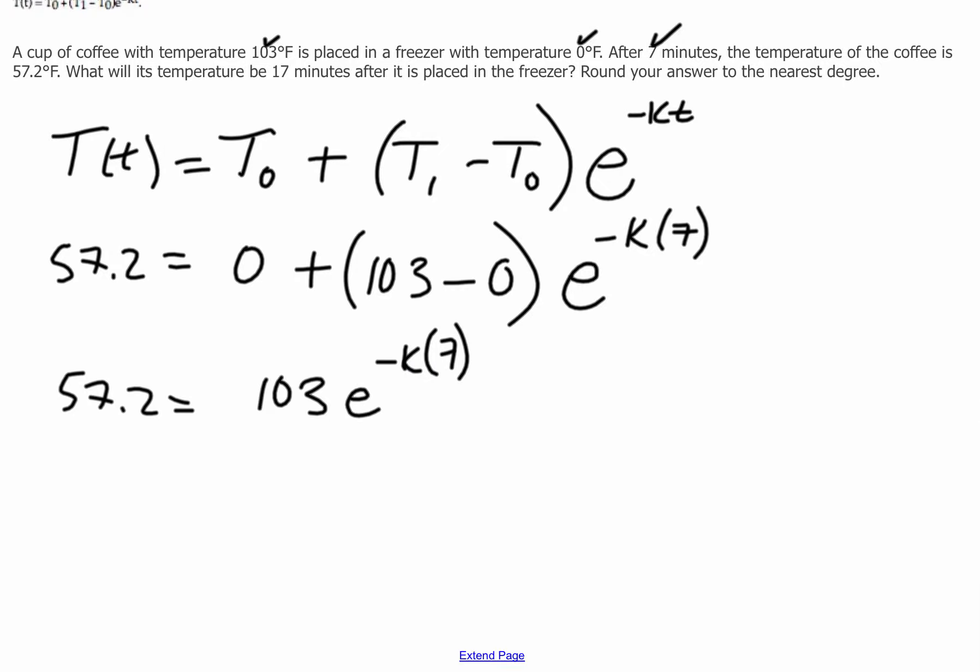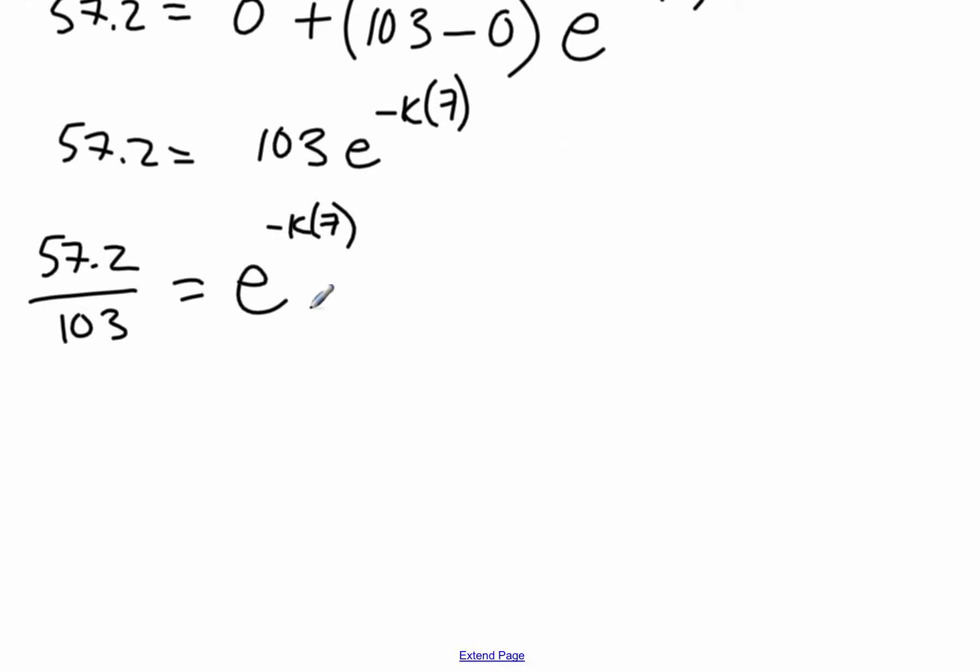Logs are going to be involved, so I'll divide both sides by 103. So 57.2 divided by 103 is equal to e to the negative k times 7. Now let's switch it from exponential form to log form. So it would be log base e of 57.2 over 103 is equal to negative k times 7. Calculator time.